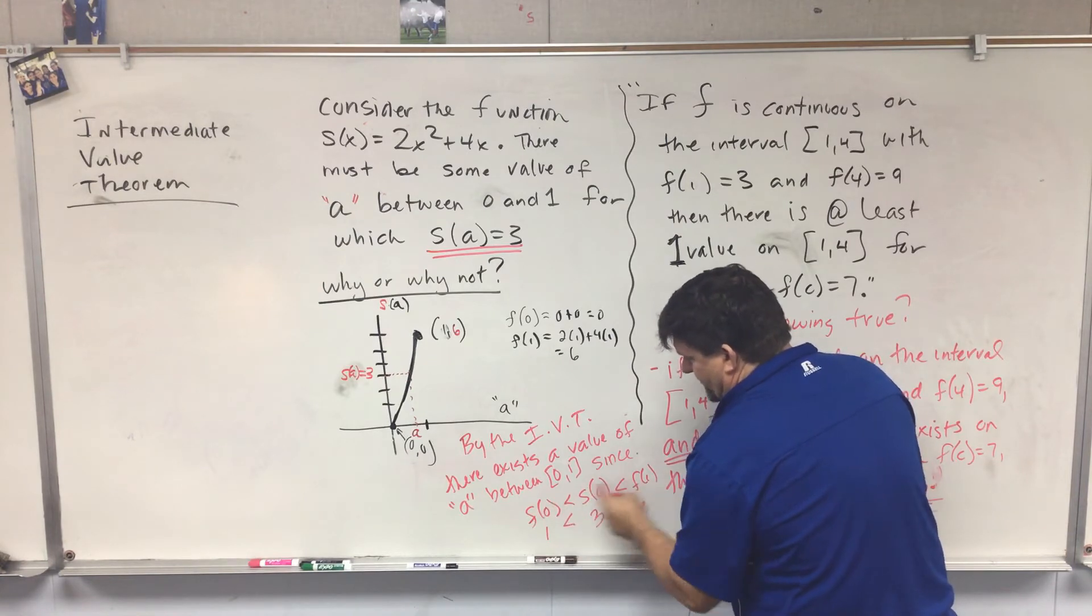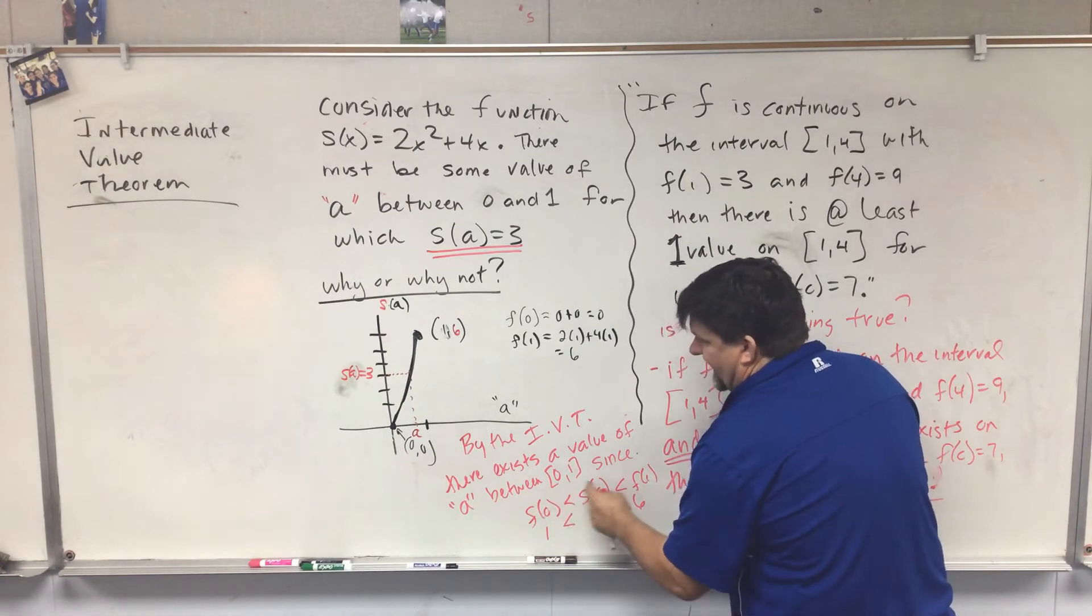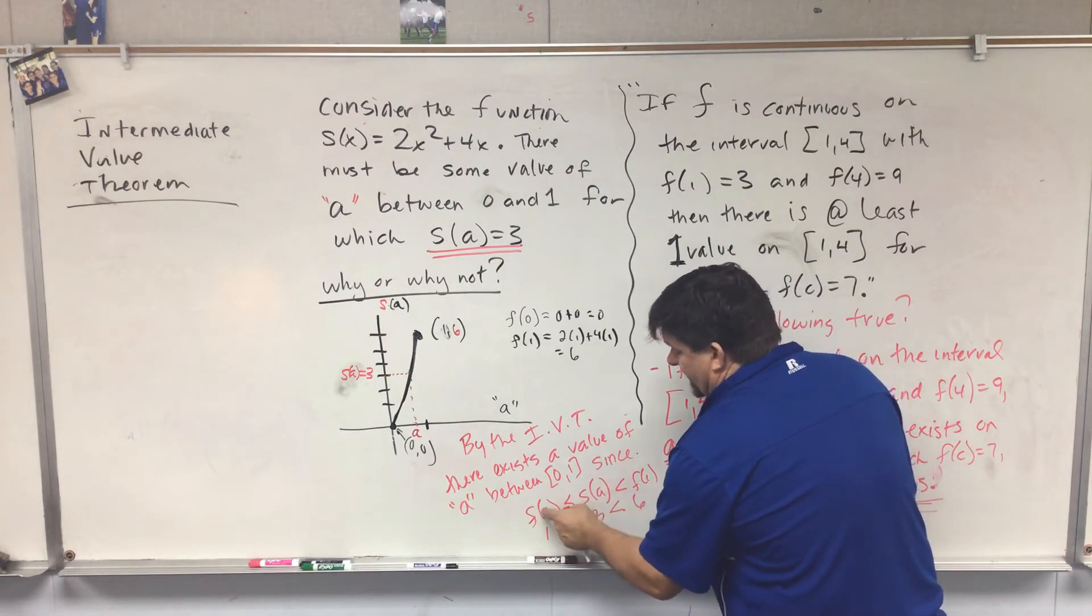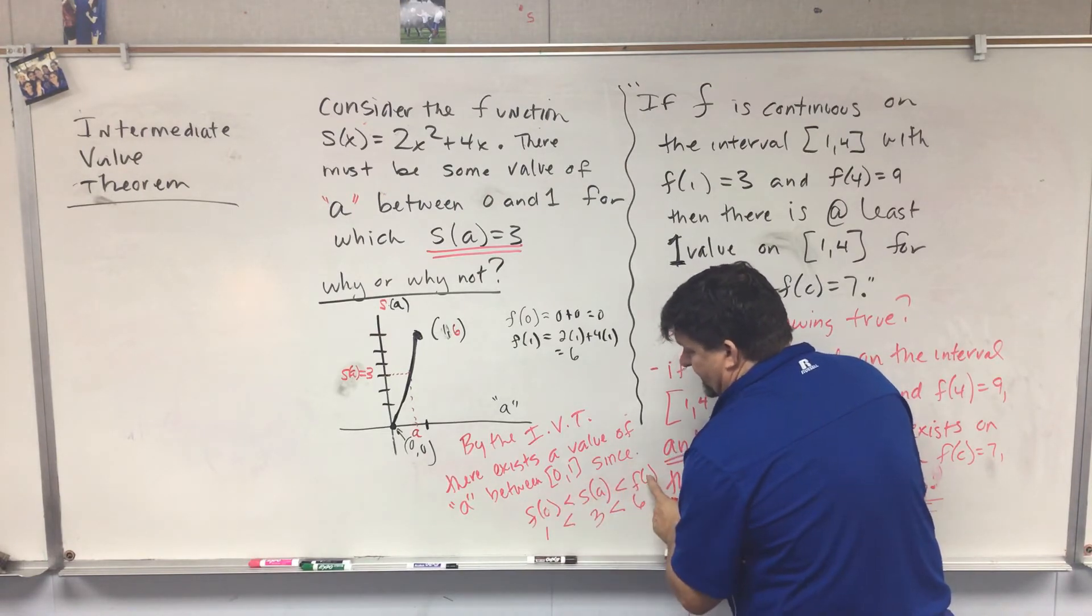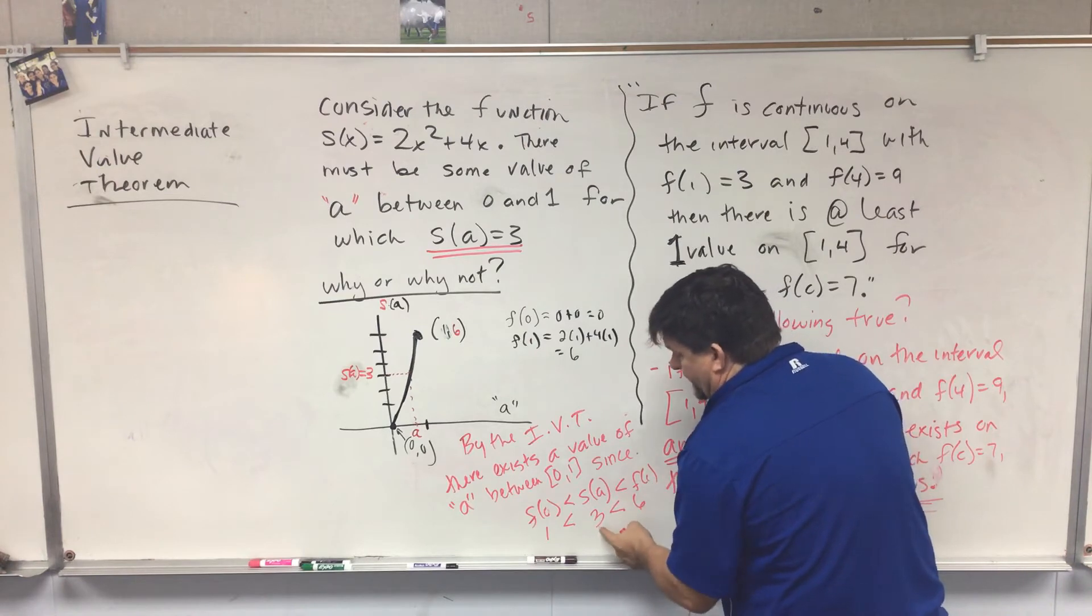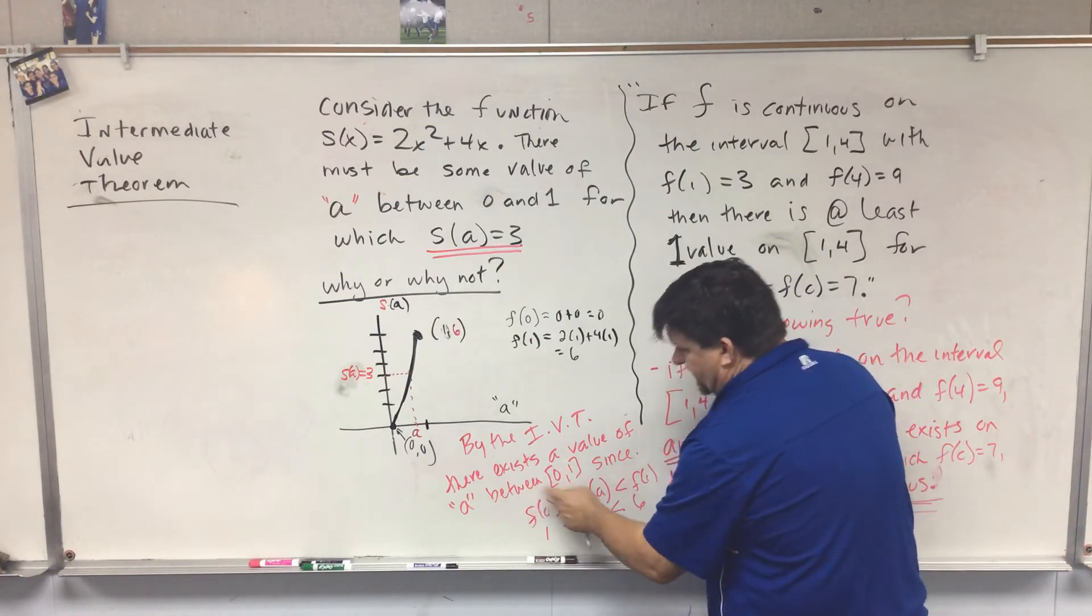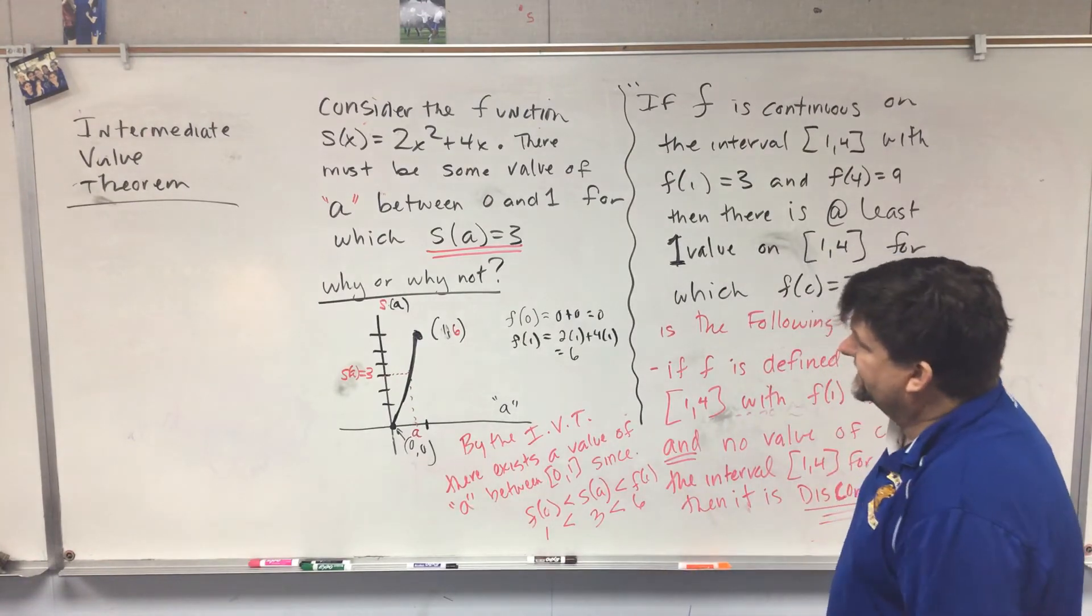So what are we saying? That 0 is less than 3, which is less than 6. The Intermediate Value Theorem says if I have an output in between my endpoints, therefore I have an input in between my endpoints. So that's what we're talking about here. That's the Intermediate Value Theorem.